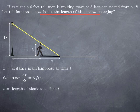Because we want to know how fast the length of his shadow is changing, the first thing we need is to introduce a variable for the length of the shadow. Let's call that s. What we want to obtain is the rate of change of s with respect to time.